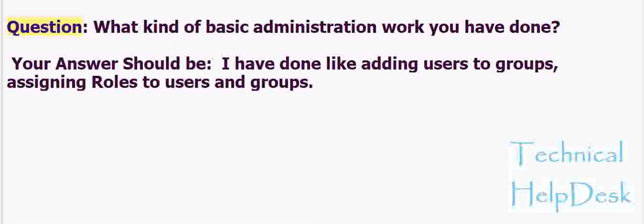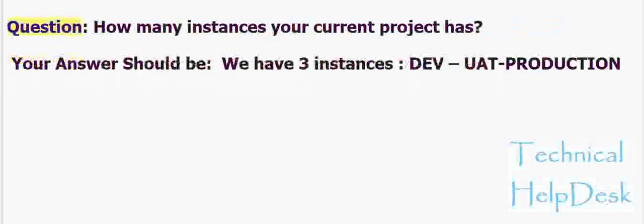Question: What kind of basic administration work have you done? Your answer should be: I have done things like adding users to groups and assigning roles to users and groups. Question: How many instances does your current project have? Your answer should be: we have three instances — dev, UAT, and production.